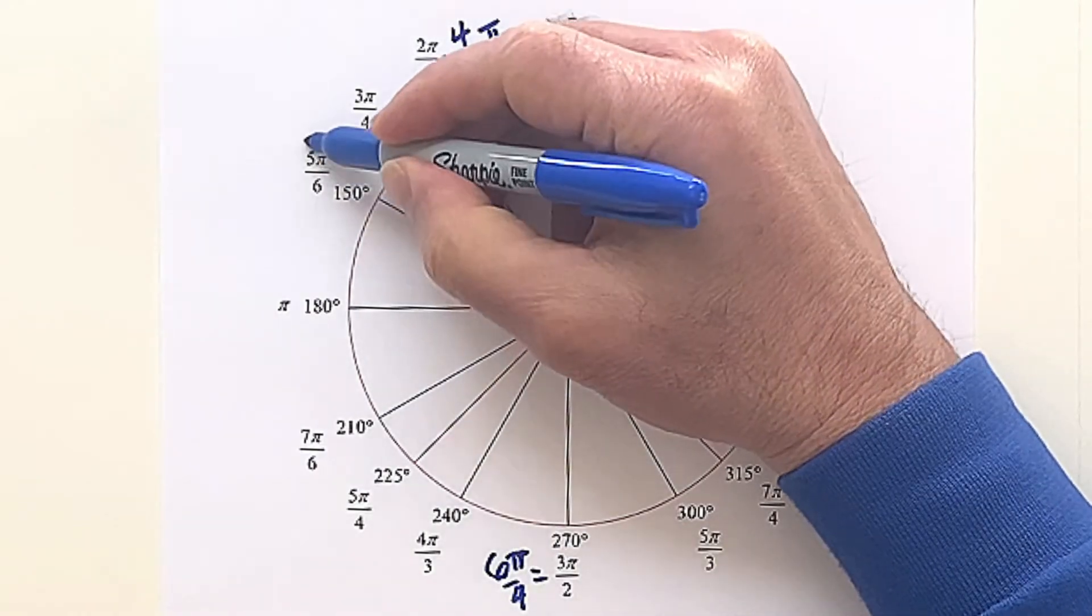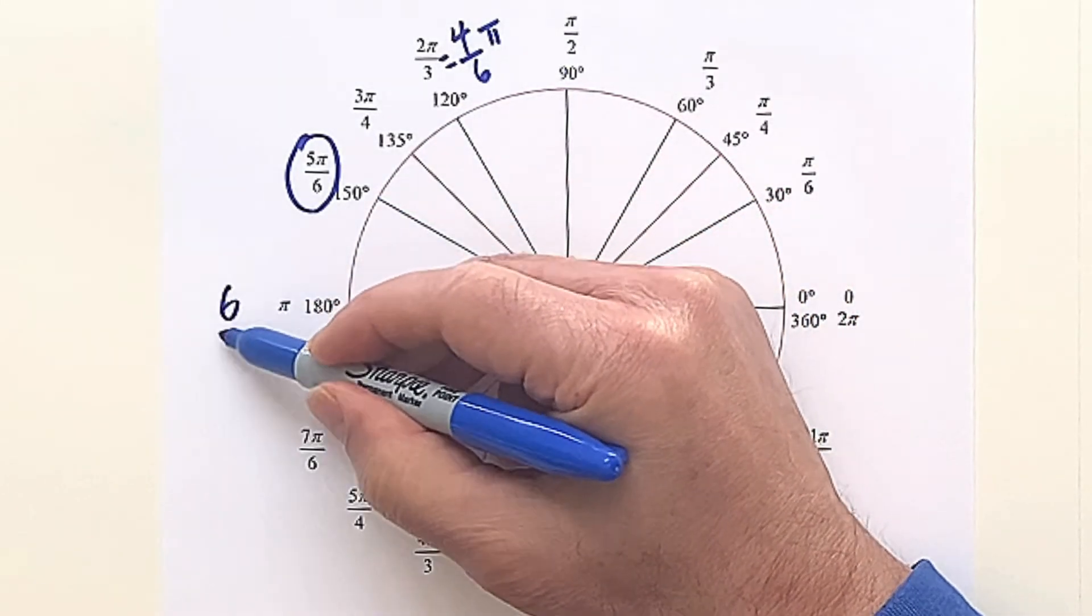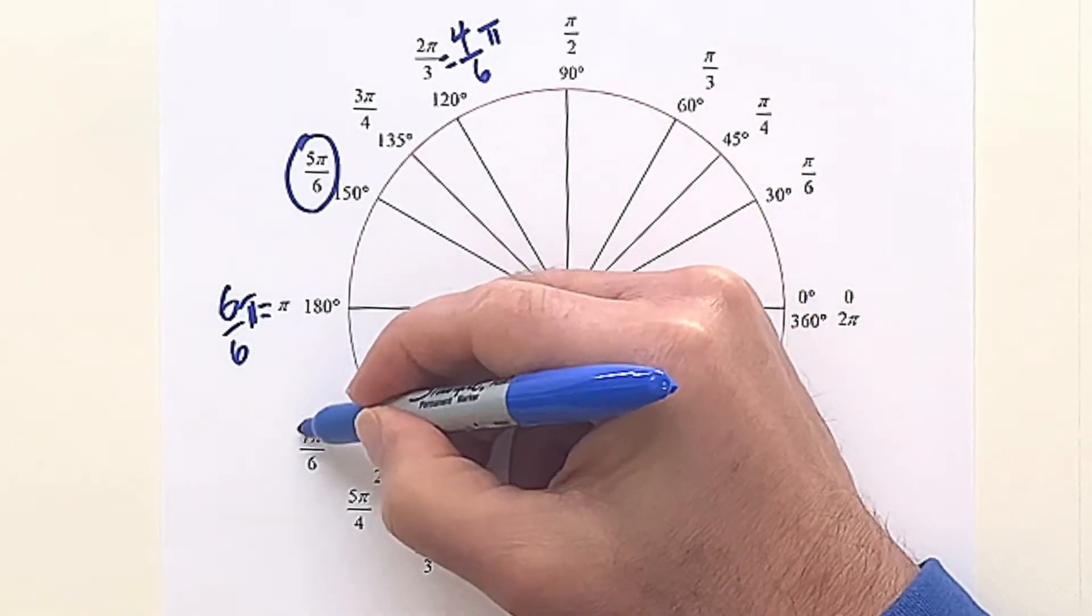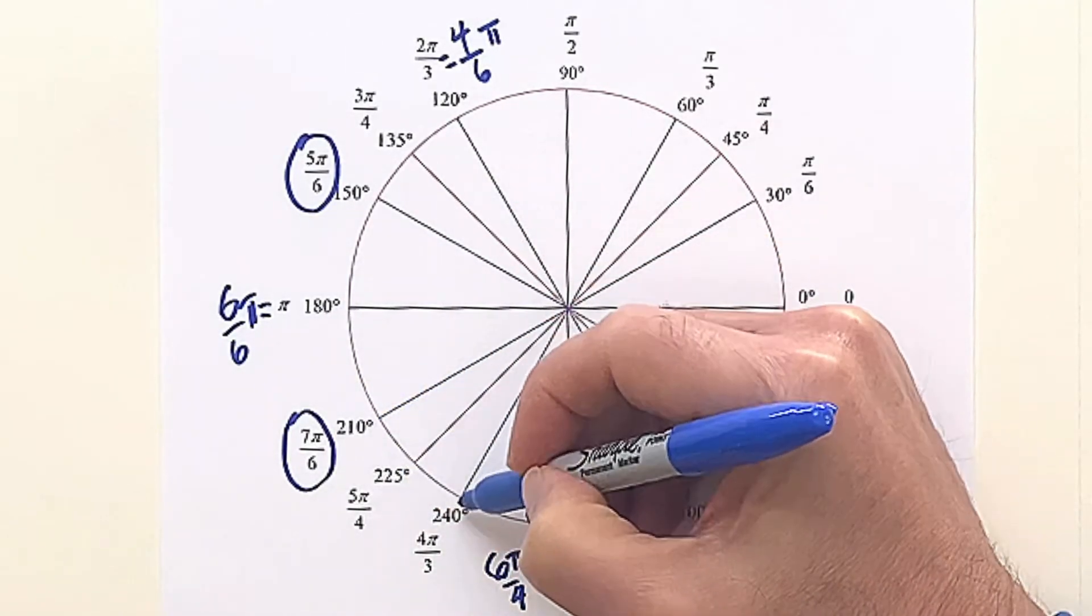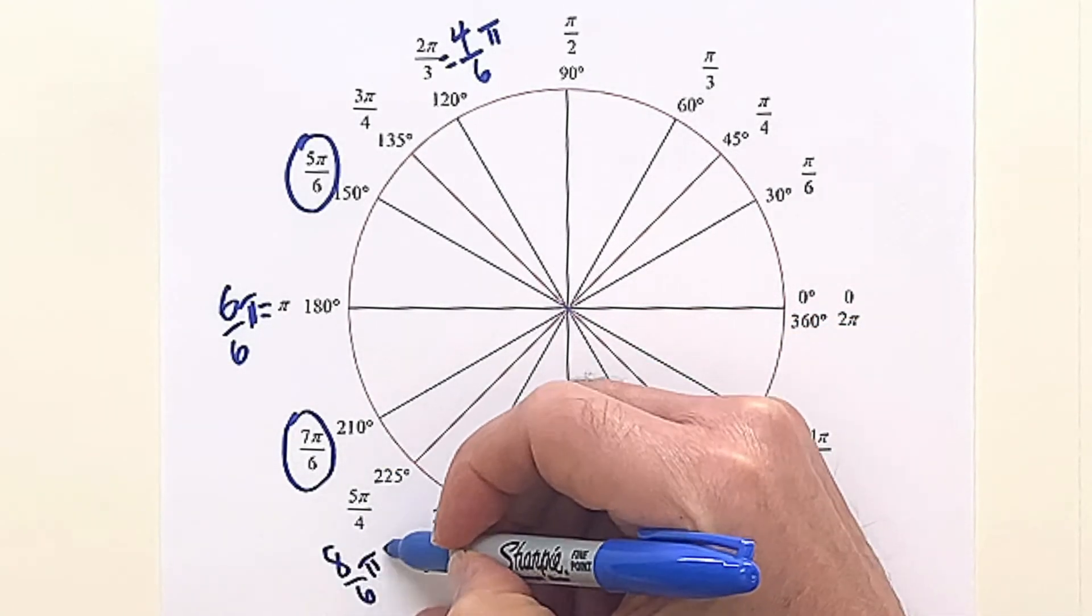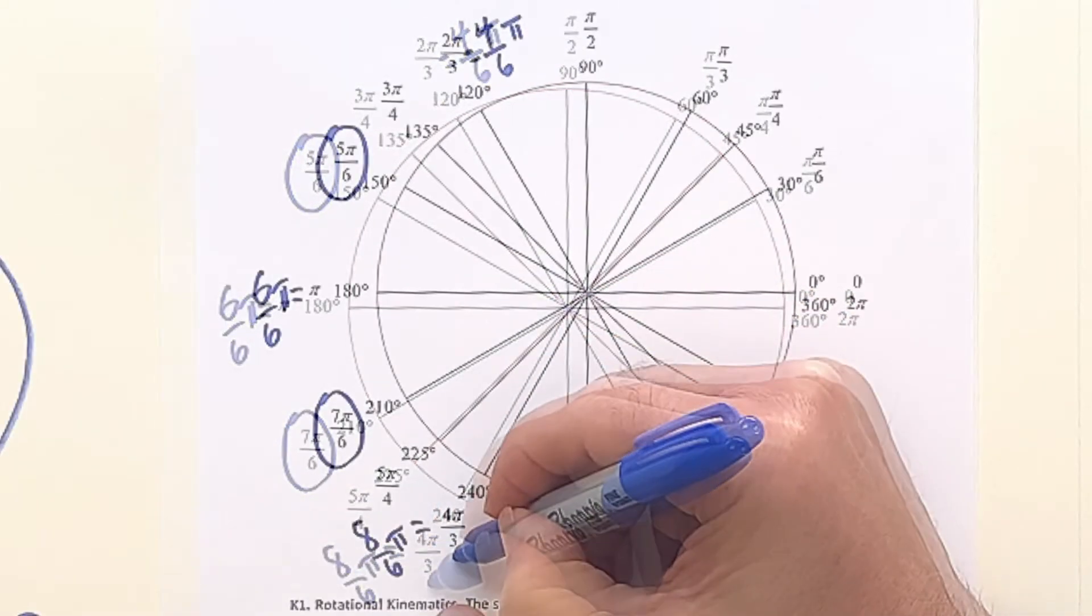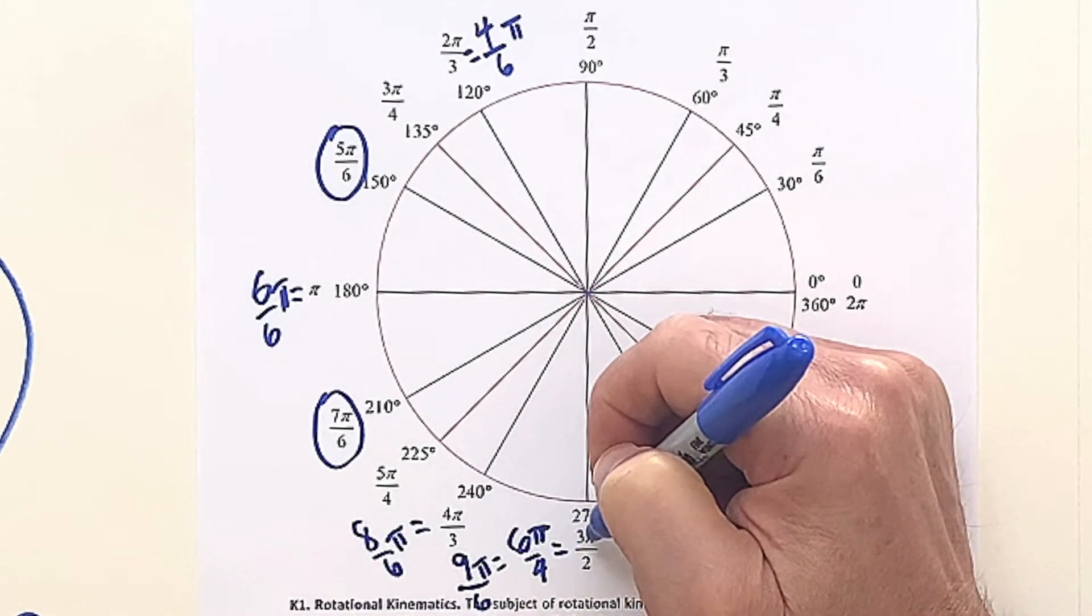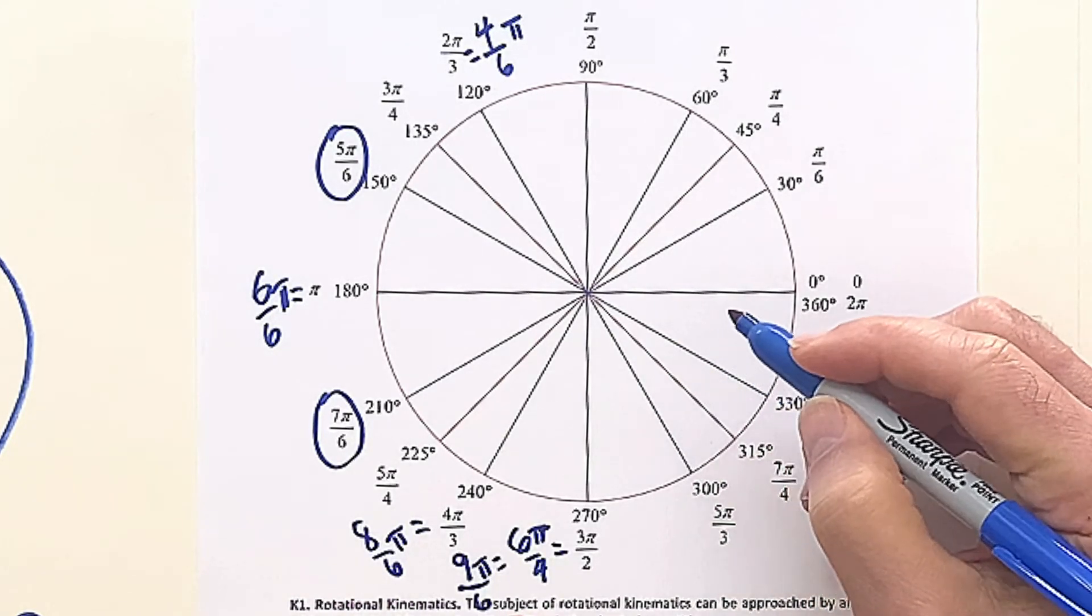Then if we go 30 more, we have 5 sixths. And if we go another 30, we get 6 sixths, and 6 sixths is equal to 1. Then 30 more takes us to 7 sixths. And 30 more down to here, to 240, would be 8 sixths, and 8 sixths reduces to 4 thirds. And then if we go to 9 sixths, 9 sixths pi reduces to 3 over 2.